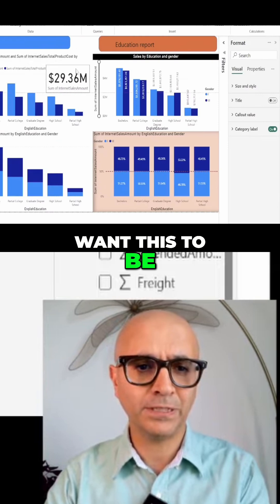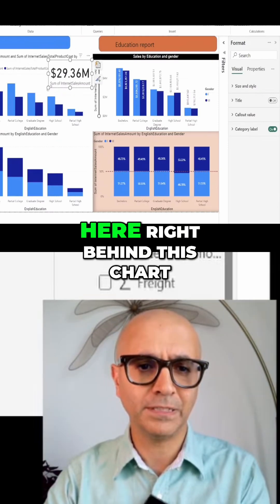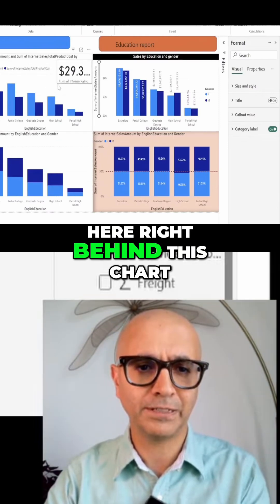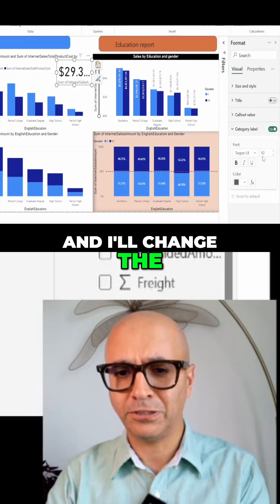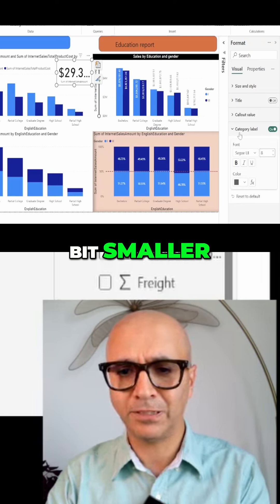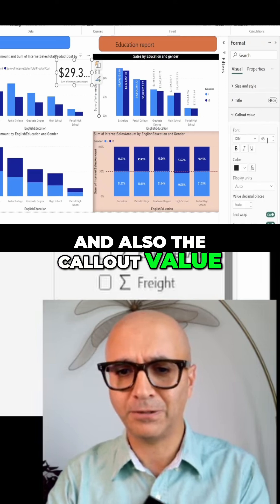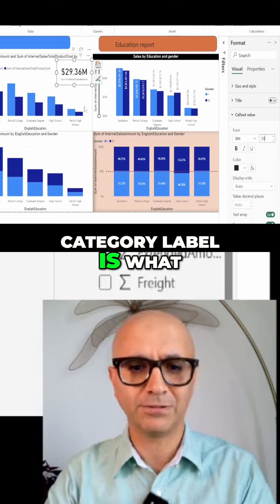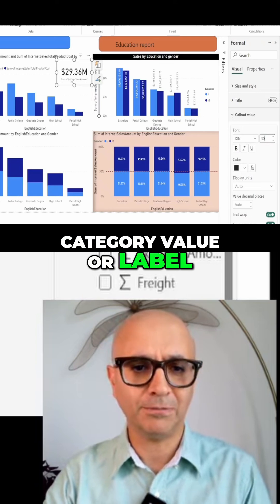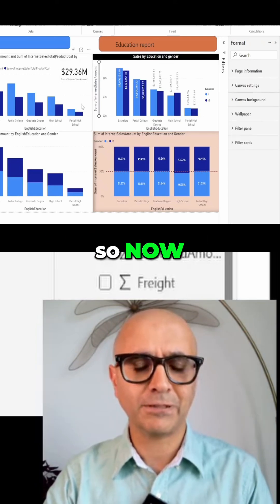want this to be here right behind this chart, and I'll change the size to make it a little bit smaller. The callout value is what you see as the number, and the category label is what you see as the text. Now you see that this